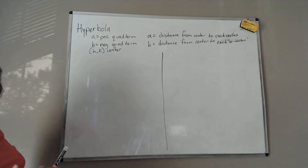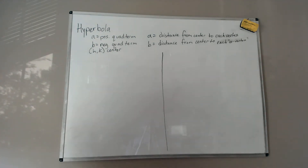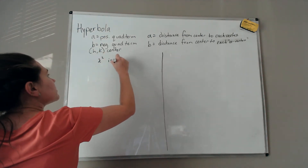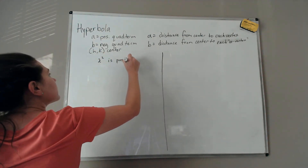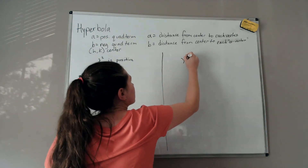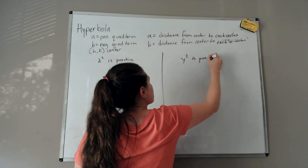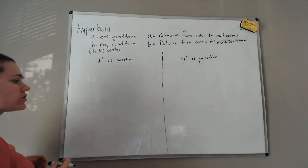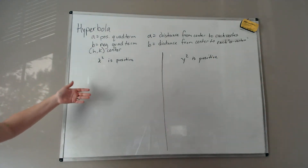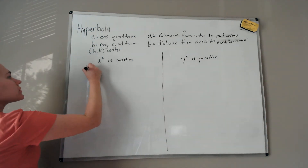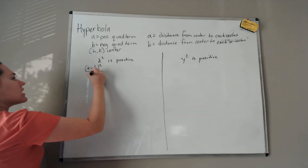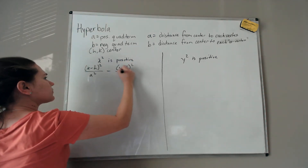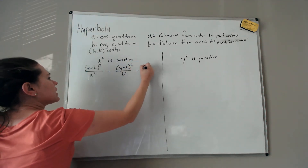There are two different ways a hyperbola could look: if x-squared is the positive quadratic term, or if y-squared is the positive quadratic term. When x-squared is positive, the standard form looks like this: (x minus h)² over a² minus (y minus k)² over b² equals 1.